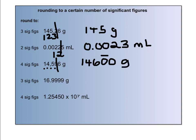In the next one, we want three significant figures — one, two, three — that's where we cut it. We're going to round the nine up because there is a nine next to it, and we're actually going to turn the six into a seven. And don't forget the zero in the tens place, because we want to have three significant figures.